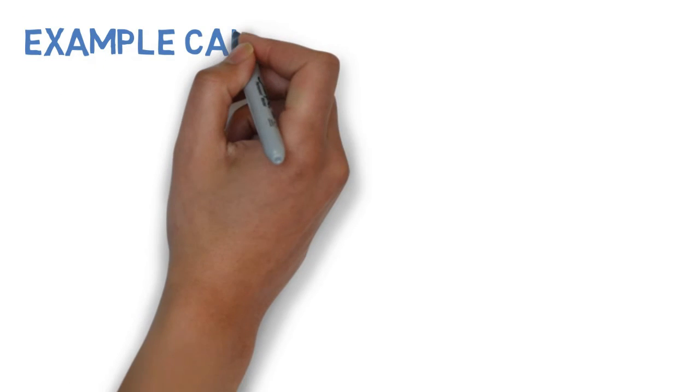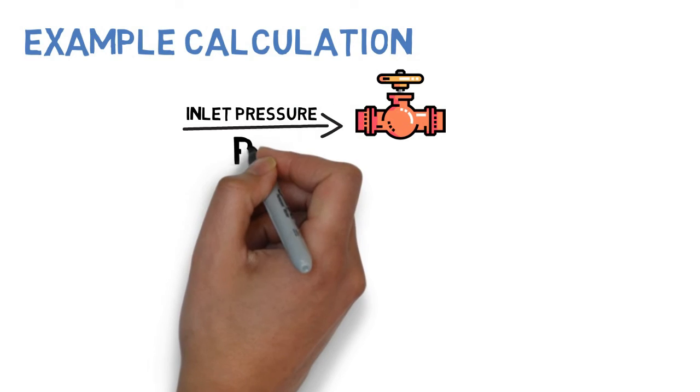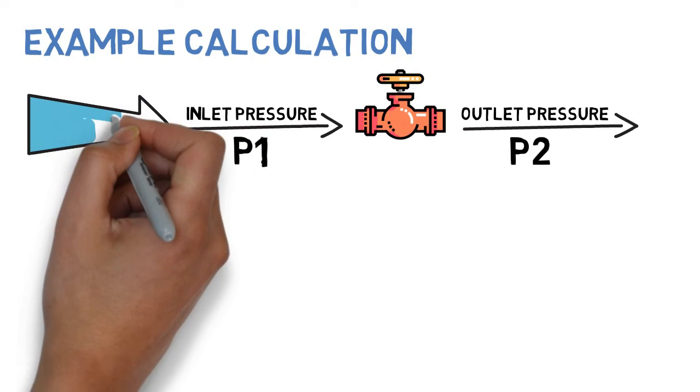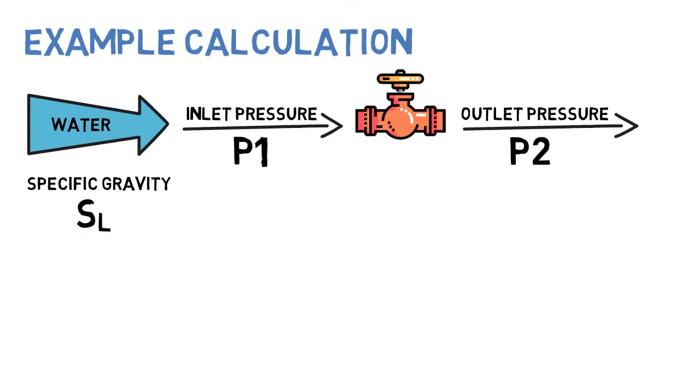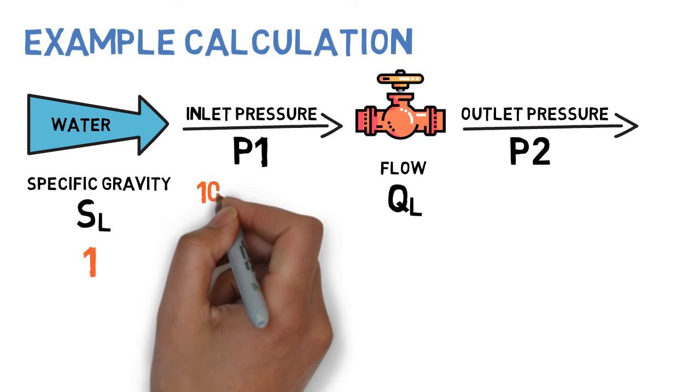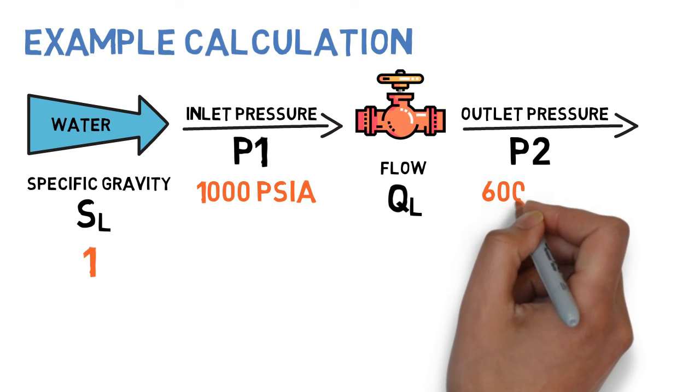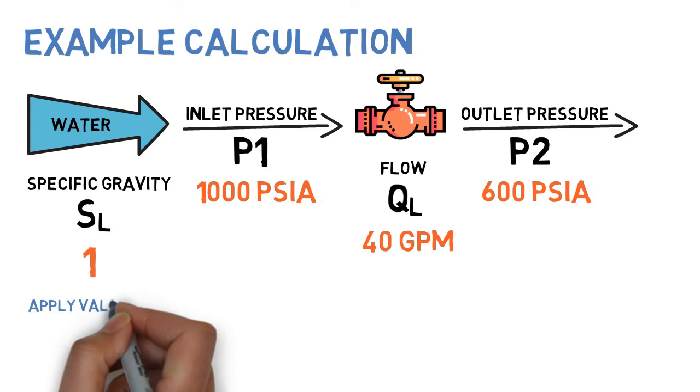Let's see an example calculation. Specific gravity of water is 1, inlet pressure is 1000 PSIA, outlet pressure is 600 PSIA, flow rate is 40 GPM. Let's apply the values in the formula.